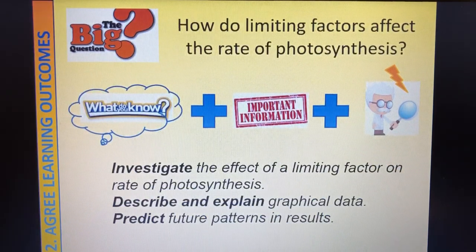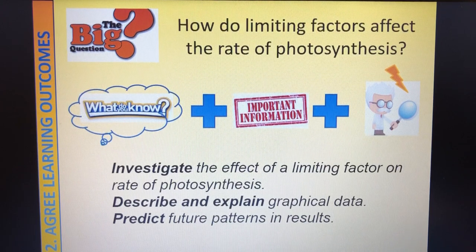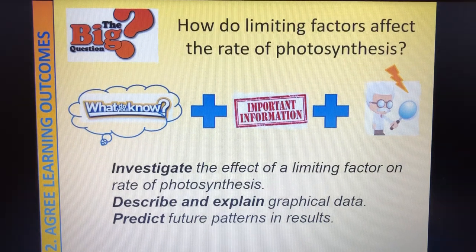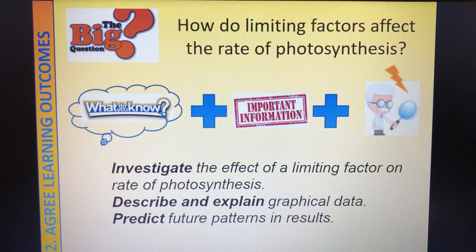Here is today's title - this title will work for the next three lessons. Maybe you could do a subtitle or subheading saying 'investigating light'. So: how do limiting factors affect the rate of photosynthesis? Write down the date and write down that title, make sure we're in our biology book. If you want to do a subheading that says 'investigating light', because that's the one we're looking at today, then that is perfectly fine.